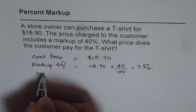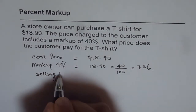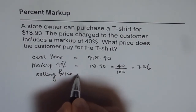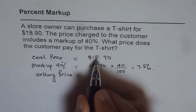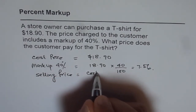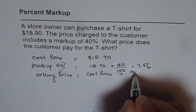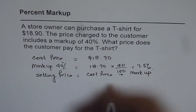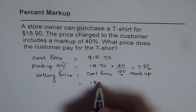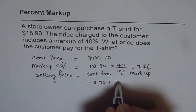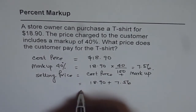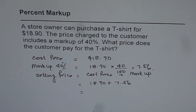So the selling price is going to be the original price — that means the cost price — plus the markup. Therefore, it is equal to $18.90 plus $7.56, and that gives us the answer as $26.46.